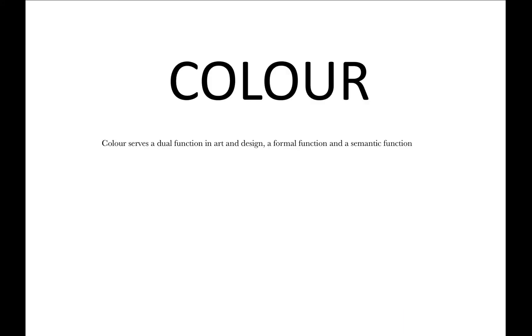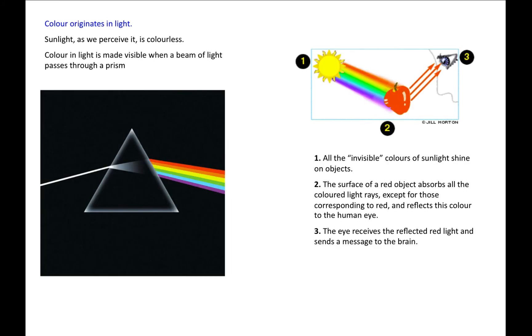Color. Color serves a dual function in art and design: a formal function and a semantic function. Color originates in light. Sunlight, as we perceive it, is colorless. Color in light is made visible when a beam of light passes through a prism.